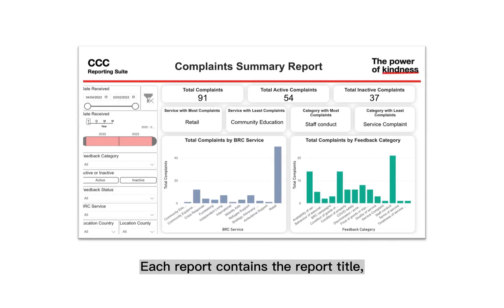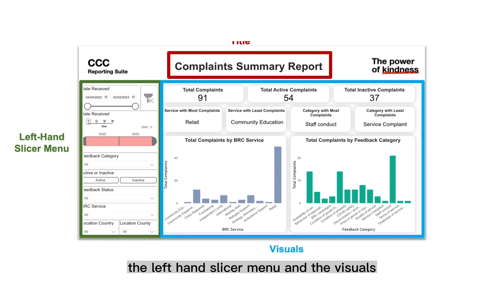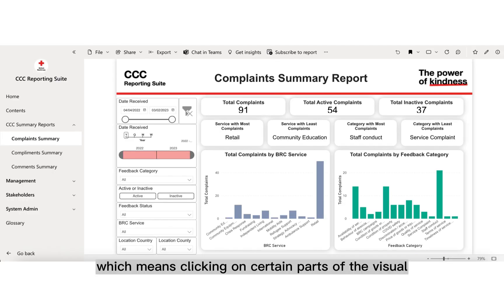Each report contains the report title, the left-hand slicer menu, and the visuals, which can be text or graphs on the page. Every visual is dynamic, which means clicking on certain parts of the visual allows you to see how they affect the data around them.